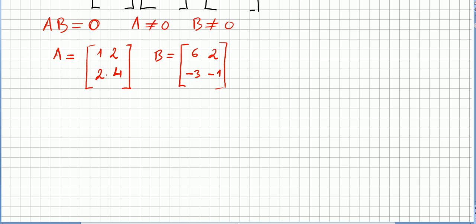Pick for instance matrix A being 1 2 2 4 and matrix B being 6 2 minus 3 minus 1. Check what is A times B.